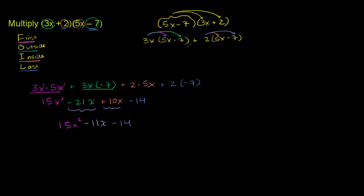If you do 2 times 5x, that's this term right over here. If you do 2 times negative 7, that is this term right over here. So we got the exact same result that we got with FOIL.